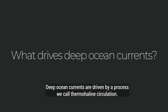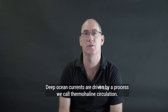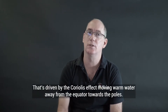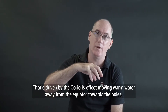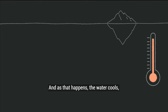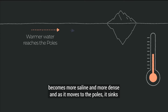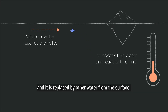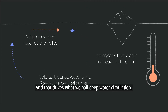Deep ocean currents are driven by a process we call thermohaline circulation. That's driven by the Coriolis effect, moving warm water away from the equator towards the poles. And as that happens, that water cools, becomes more saline and more dense. And as it moves to the poles, it sinks and is replaced by other water from the surface, driving what we call deep water circulation.